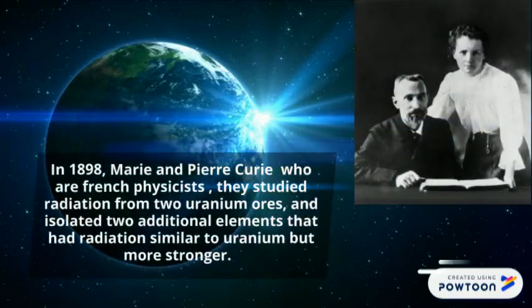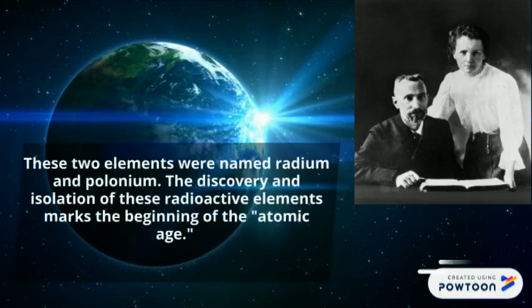In 1898, Marie and Pierre Curie, who are French physicists, studied radiation from two uranium ores and isolated two additional elements that had radiation similar to uranium but stronger. These two elements were named radium and polonium. The discovery and isolation of these radioactive elements marks the beginning of the atomic age.